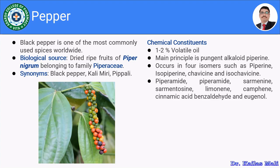Moving towards the chemical constituents of black pepper. Mainly it comprises 1 to 2 percent volatile oil, which gives it a certain aroma. The main active principle is a pungent alkaloid — that is piperine. The main chemical constituent present in black pepper is the alkaloid piperine, and piperine shows most of the drug interactions with certain drugs. It occurs in four isomers: piperine, isopiperine, chavicine, and isochavicine.